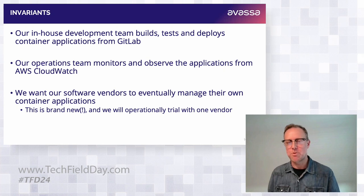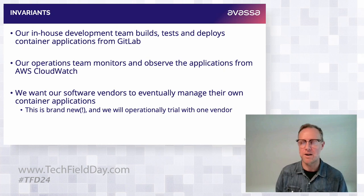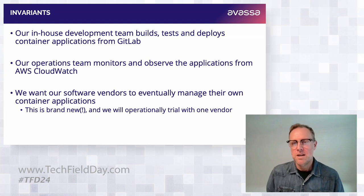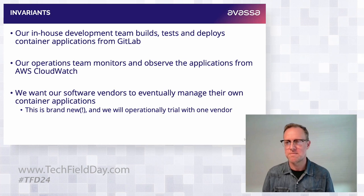Our operations team monitors and observes applications from AWS CloudWatch. They see no reason to leave that, and can't understand why they couldn't keep observing applications running in the public cloud as well as on the edge with the same toolset. And our strategy team has said: we're in the movie theater business — we're not sure we want to develop, deploy, and manage applications. We want our software vendors to do that, but on our infrastructure, so we get resilience, autonomy, and good ping times.